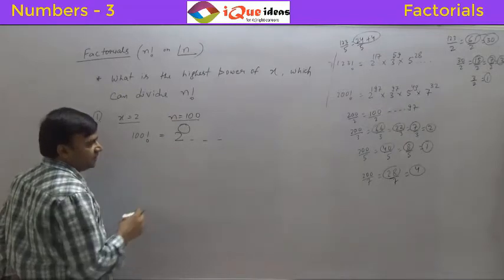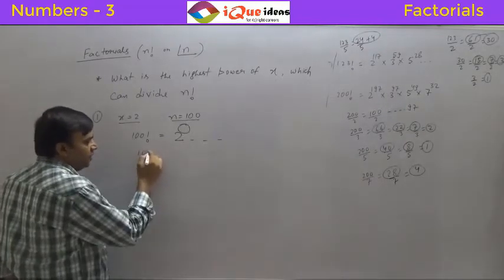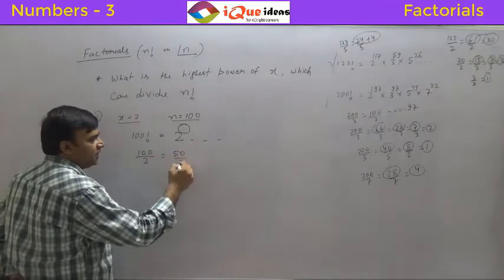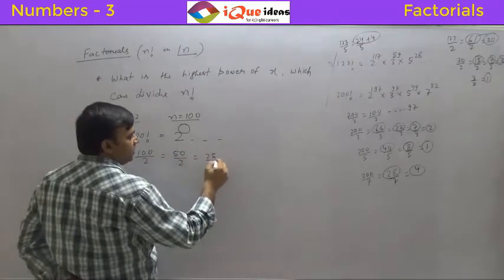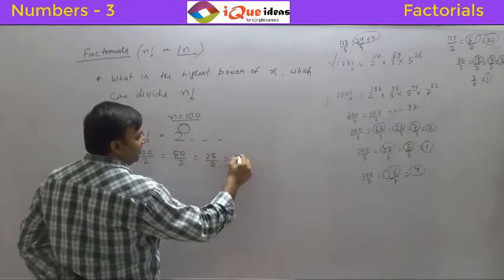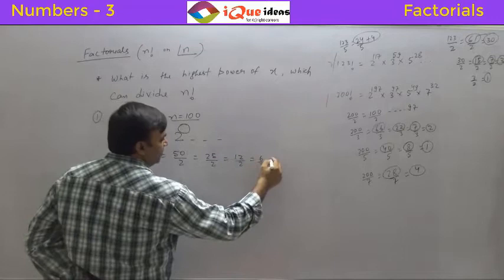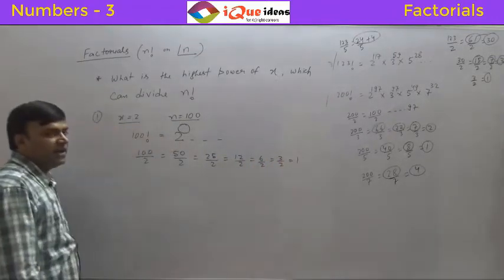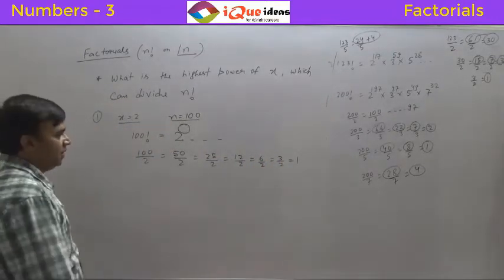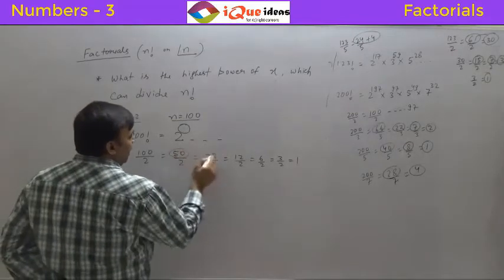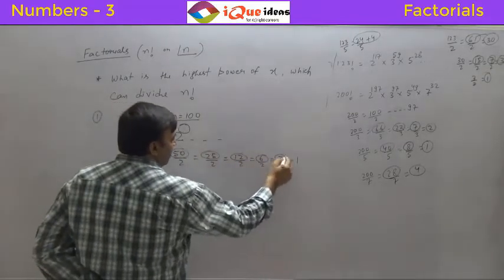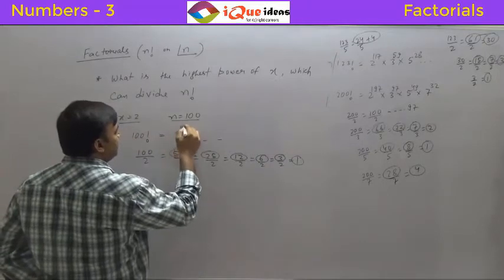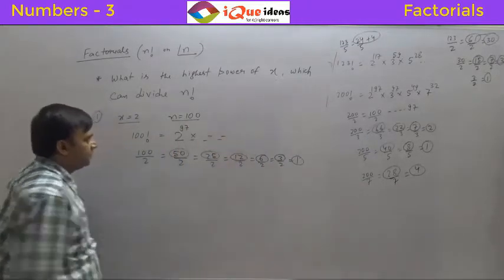The answer is 97 from the previous calculation. If you have to do it, just divide 100 by 2 to get 50, then 50 by 2 gives 25, then 25 by 2 gives 12, then 12 by 2 gives 6, then 6 by 2 gives 3, then 3 by 2 gives 1. Go on dividing until no further whole-number division is possible, then add all those quotients.